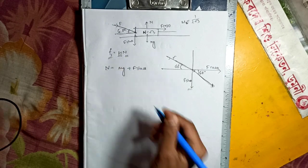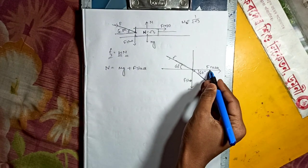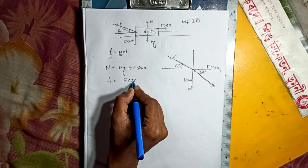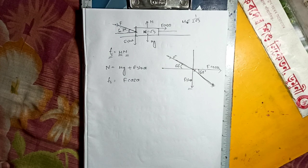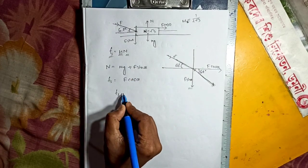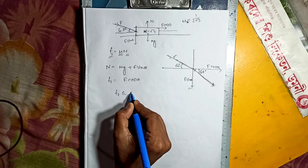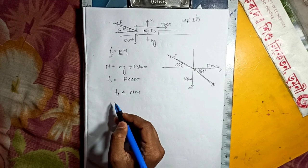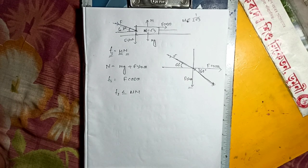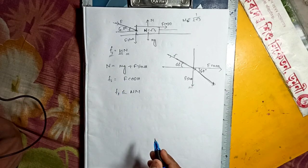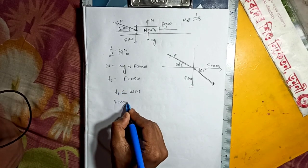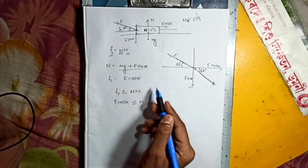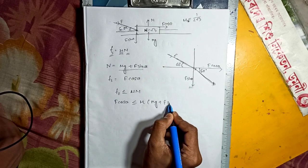We also learn about static friction maximum force. We're talking about F·cosθ, so Fs equals F·cosθ. The condition for no motion is Fs less than or equal to F·cosθ. So Fs equals mu into N, and since N equals MG plus F·sinθ, the normal force equation is N equals MG plus F·sinθ.